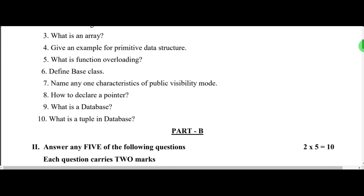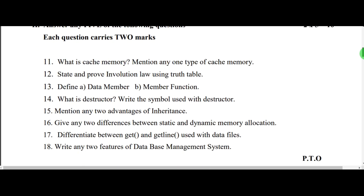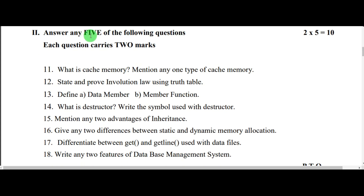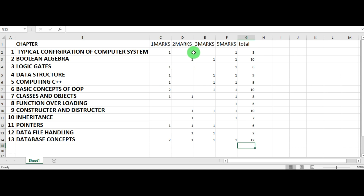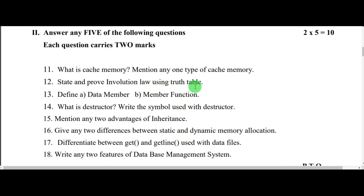Then it comes to the two-mark questions. You need to answer any five out of eight questions total. The first question is from configuration of computer system, then one question from logic gates. See here — one question from configuration of computer system, and the next is from boolean algebra or logic gates.